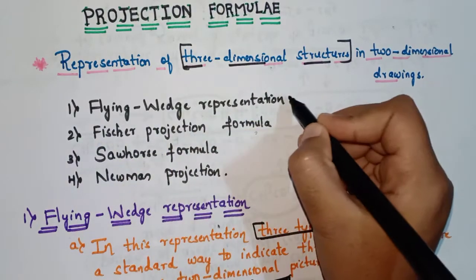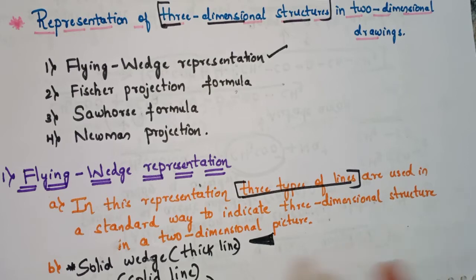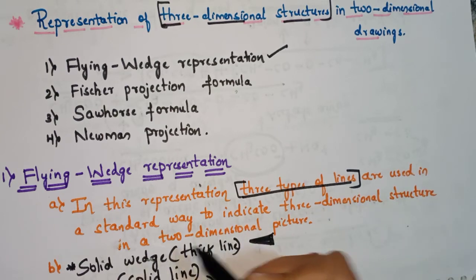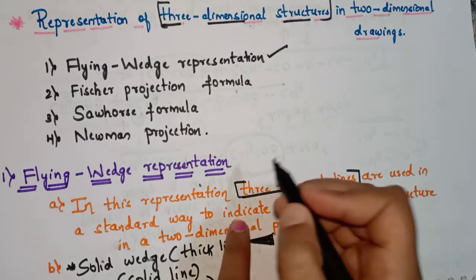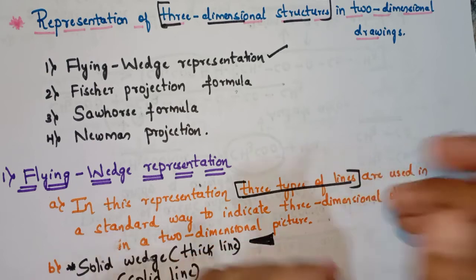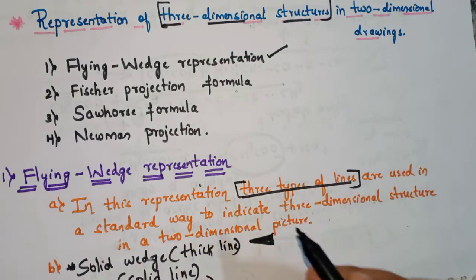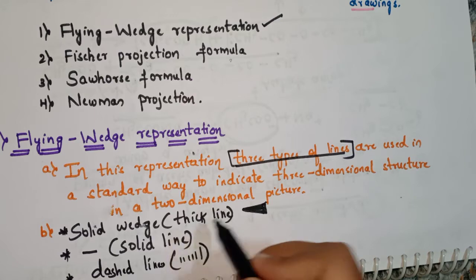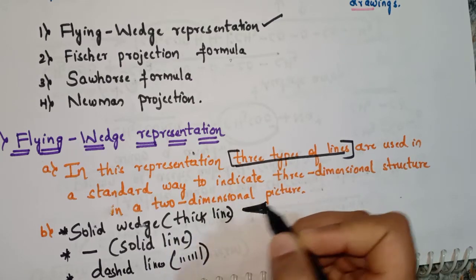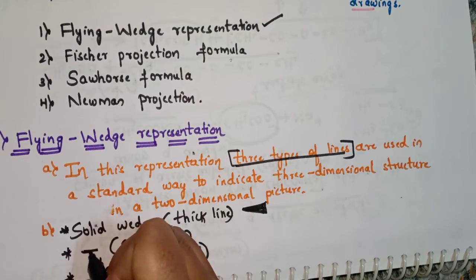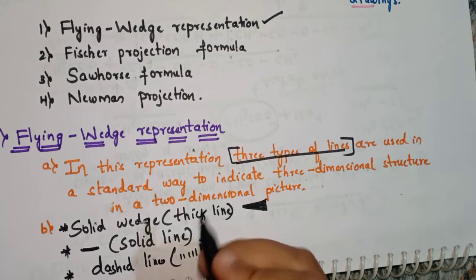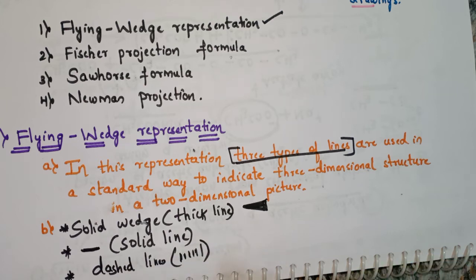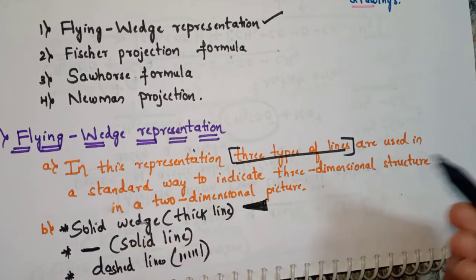Coming to the first one, that is flying wedge representation. In this representation, three types of lines are used in a standard way to indicate three-dimensional structure in a two-dimensional picture. The first type is solid wedge, which we can call a thick line. The second is a solid line, which is a continuous line. The third is dashed lines.